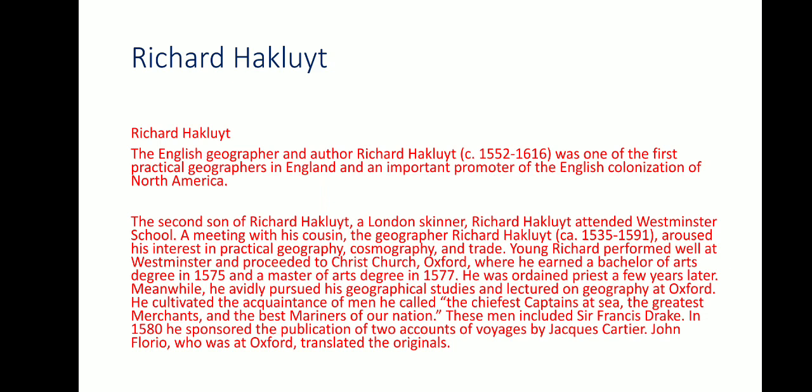Richard Hakluyt was the second son of a London skinner. He attended Westminster School. A meeting with his cousin, the geographer Richard Hakluyt, aroused his interest in practical geography, cosmography, and trade. Young Richard performed well at Westminster and proceeded to Christchurch, Oxford, where he earned a Bachelor of Arts degree in 1575 and a Master of Arts degree in 1577. He was an ordained priest a few years later.